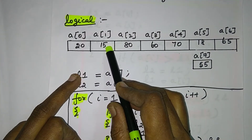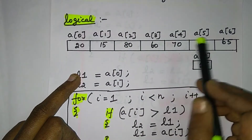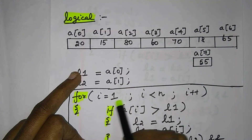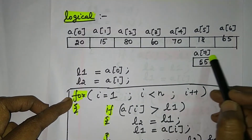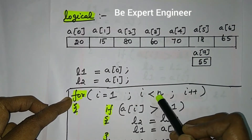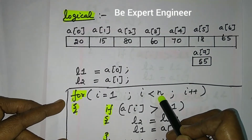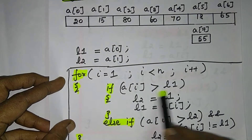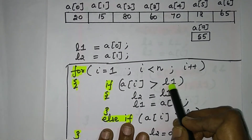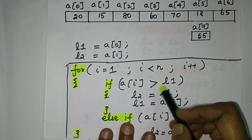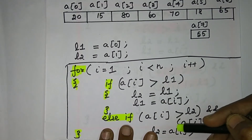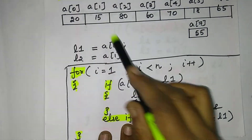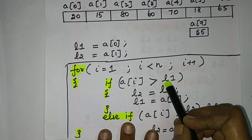Check number one variable. This is the first element. We are checking so the condition is less than n. Then we compare A of 1 — that is 15 — and compare it to L1, which is the first largest.